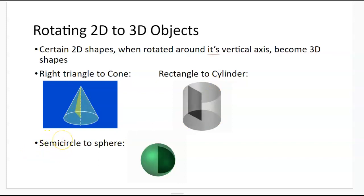There can be multiple shapes that shape a sphere, but just for common sense, a semicircle to a sphere.